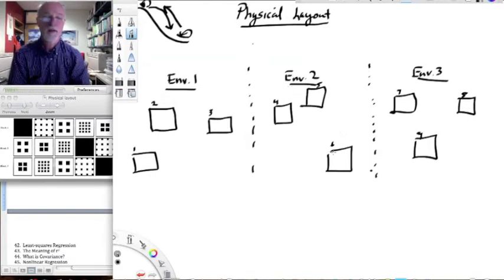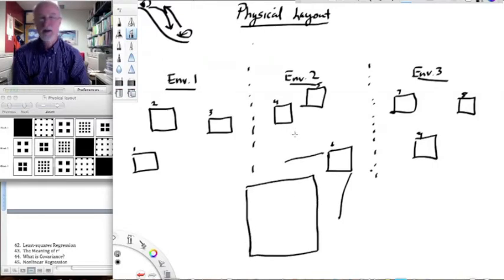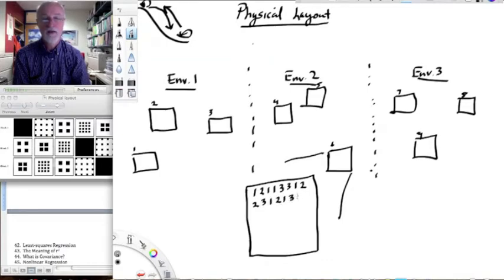And then within those blocks, what I would typically do is I wouldn't show the detail in every block, but I would blow up one of them to show the detail. Okay, so within these blocks, I'm going to plant individuals from my three populations, right? Because I'm doing a reciprocal transplant experiment. So I want to show that I am randomly placing those individuals within the block.